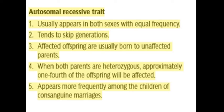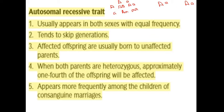There are several features of autosomal recessive traits. This trait occurs in both males and females in equal proportions. It tends to skip generations — meaning if a disorder is seen in a grandparent, the same disorder may appear in the grandchild, with less probability of the parent's generation showing the phenotype. Affected children are usually born to unaffected parents.